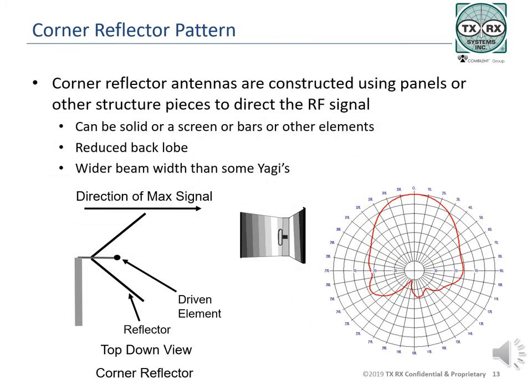The corner reflector antenna is constructed of a center-fed half-wave dipole spaced approximately one-quarter wavelength in front of a pair of plates placed at 90 degrees to each other behind the active element. Energy from the driven element is reflected and arrives back at the driven element in phase to reinforce the energy being radiated in the forward direction. Manufacturers use different materials for the corner reflector itself: some use solid plates of aluminum or other metals, some use screens, and some use bars behind the driven element. The shield or reflector significantly attenuates radiation in the rear and sides of the antenna.